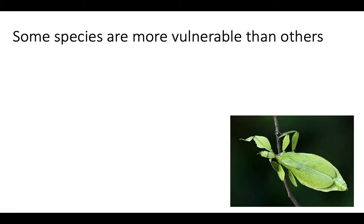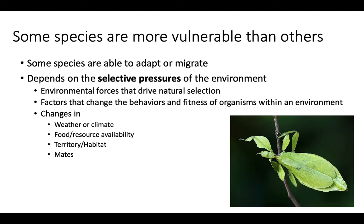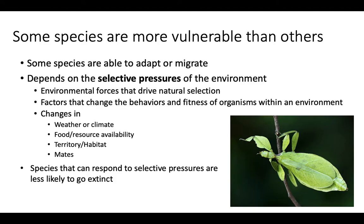Not all organisms are equally vulnerable. If a species can adapt or migrate, it's less likely to go extinct. Whether they can adapt or migrate depends on the selective pressures of the environment. Selective pressures are forces from the environment that drive natural selection — factors that could change behavior or the fitness of an organism. It could be changes in the weather or climate, availability of food or other resources, amount of territory or habitat, availability of mates, competition, etc. As those selective pressures are exerted on populations, if they can respond and adapt or migrate, they're less likely to go extinct. If they can't respond, they are much more at risk.